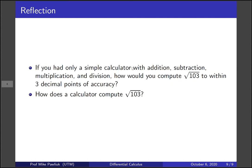Let's end with some reflections. If you only had a simple calculator with addition, subtraction, multiplication, and division, how would you compute the square root of 103 to within three decimal points of accuracy? And how does a calculator actually compute the square root of 103? How does it work?